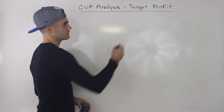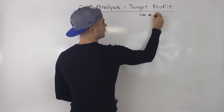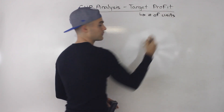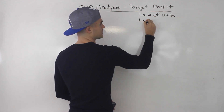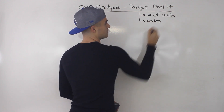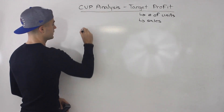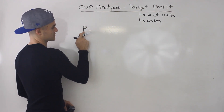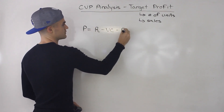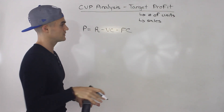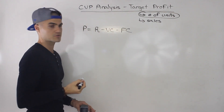And as we did with breakeven, we're going to look at target profit from two perspectives: from the number of units that we have to sell to achieve a certain target profit, and the sales that we have to get in order to get a certain target profit.